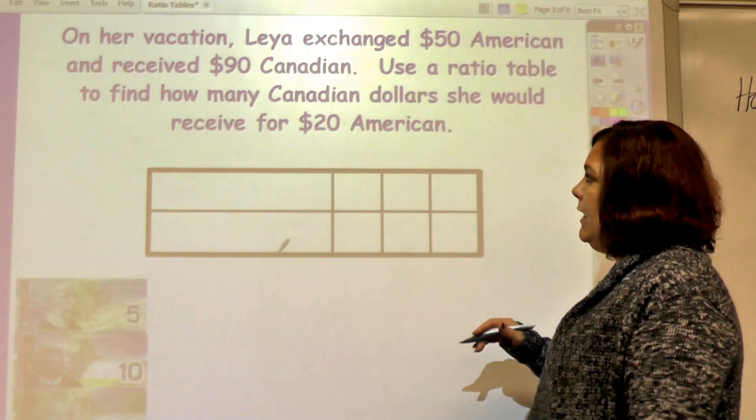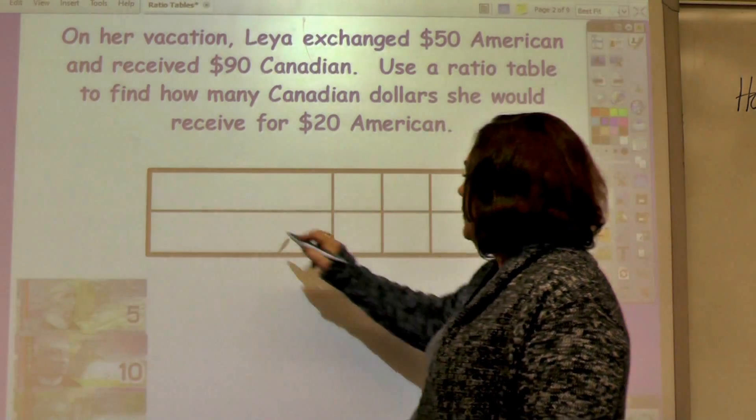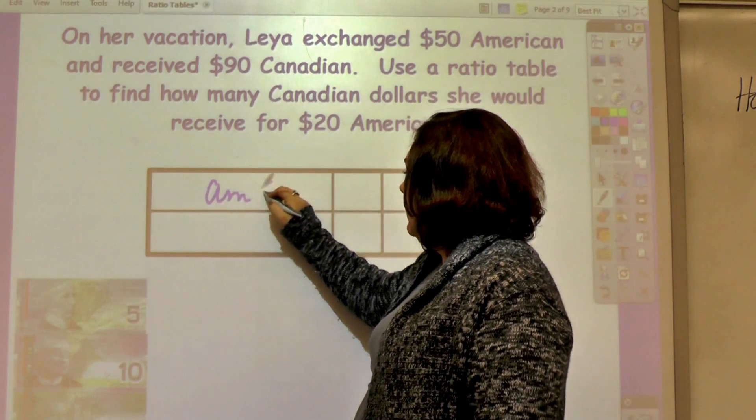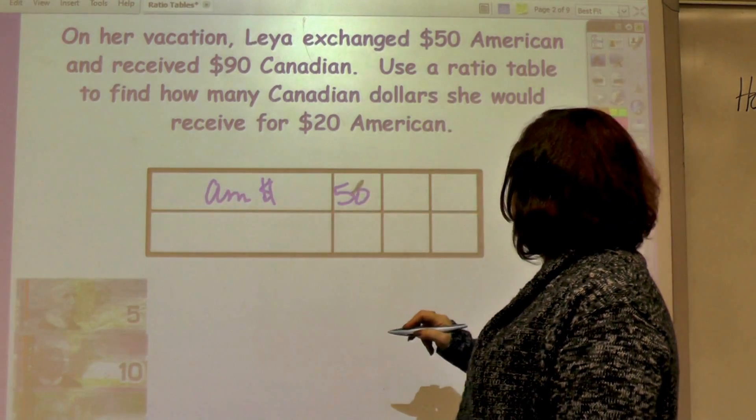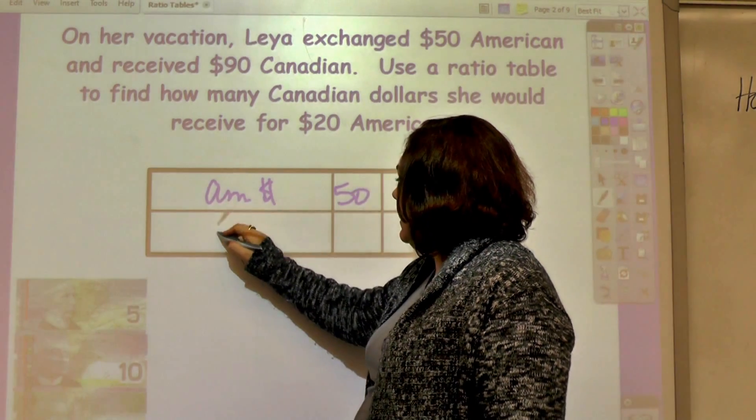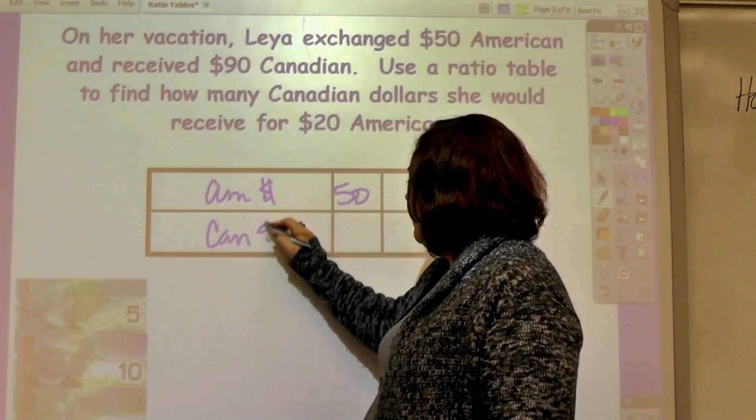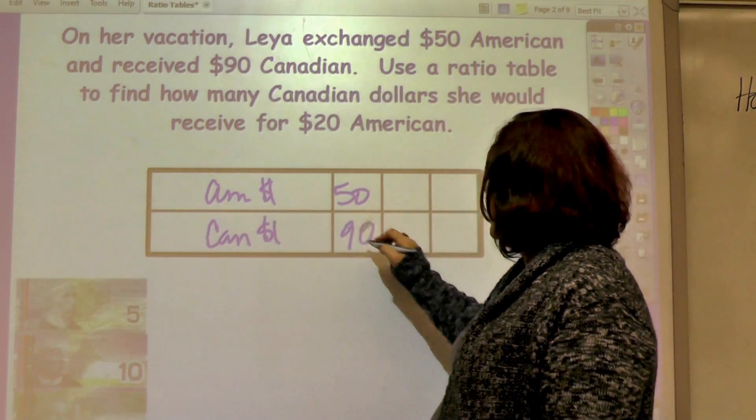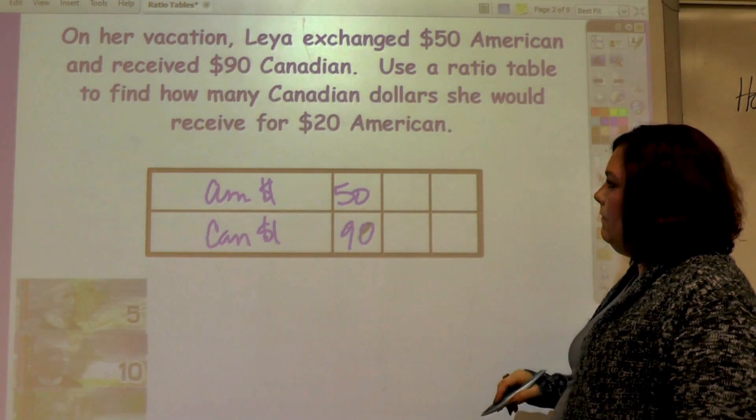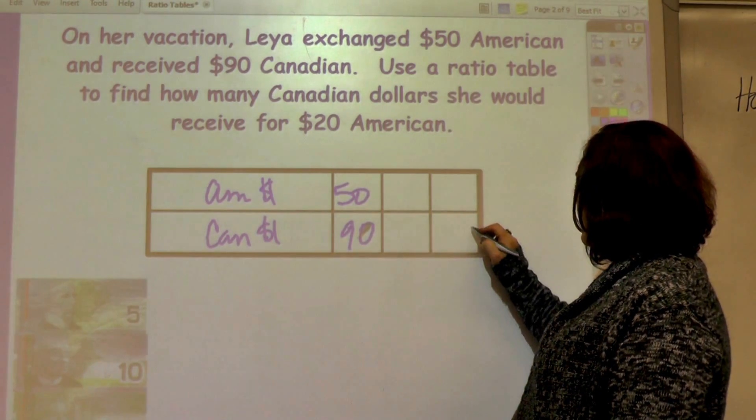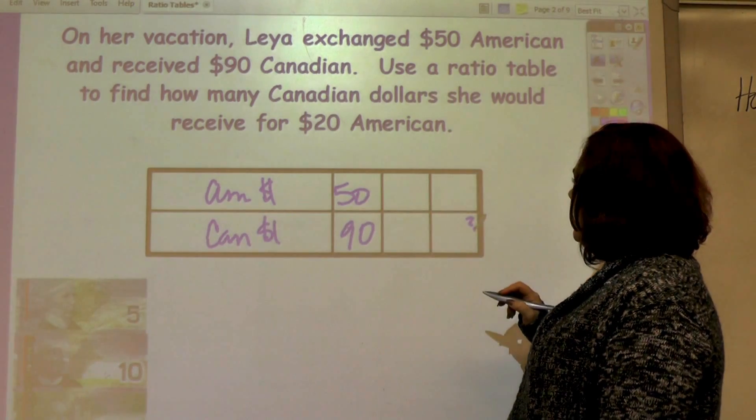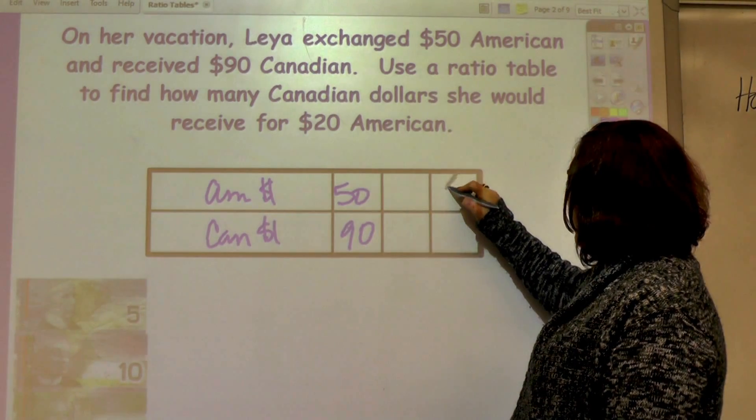On her vacation, Leah exchanged $50 American, so American dollars is 50, and received $90 Canadian, so Canadian is $90. Use a ratio table to find out how many Canadian dollars, this is the question mark, she would receive for $20 American.